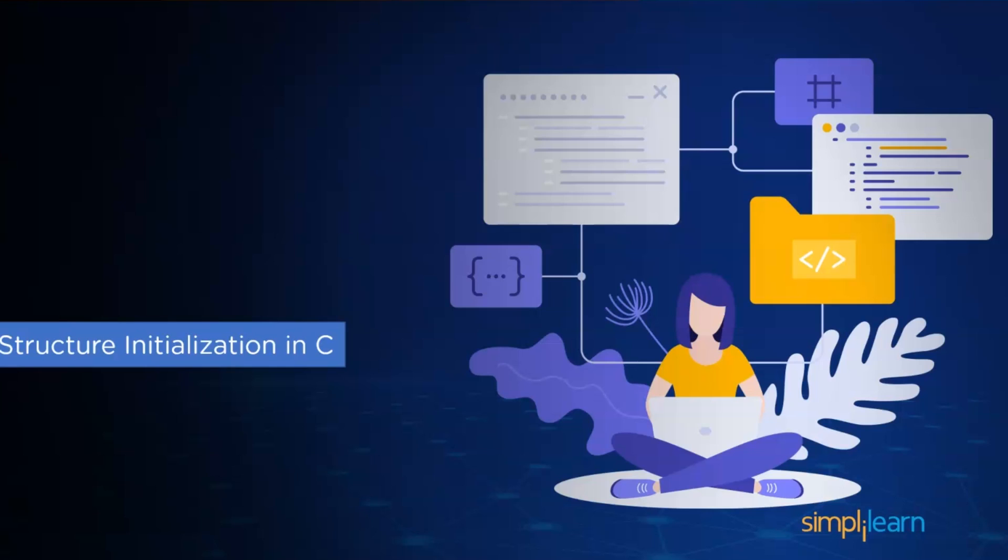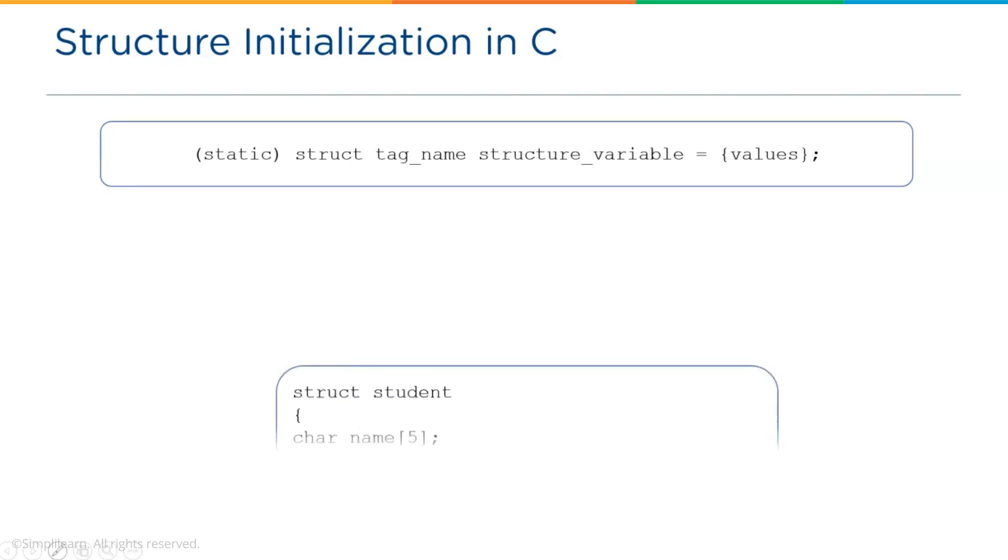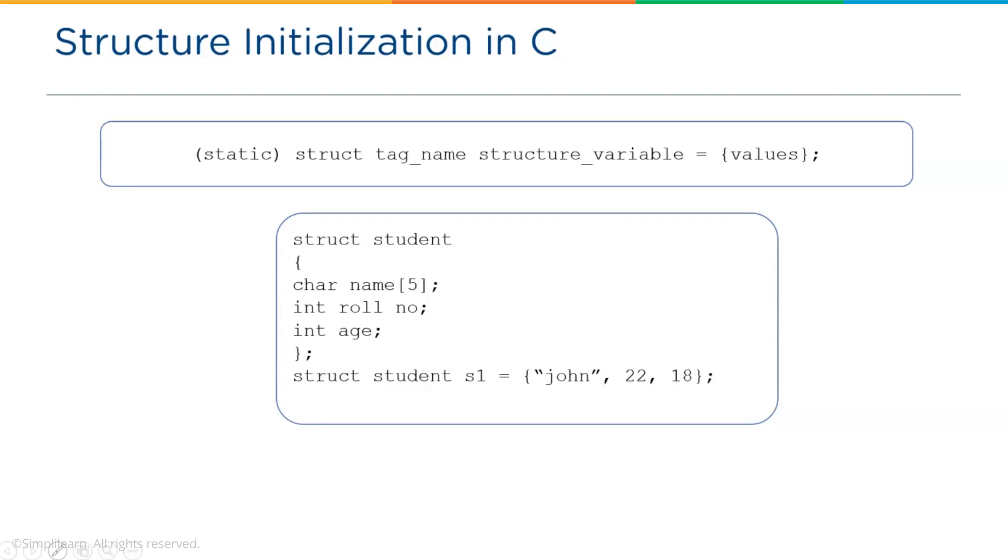Next, we have structure initialization in C. We can also initialize the structure variable. And to initialize, we can directly assign values of all the structure members inside the curly brackets with an assignment operator. For example, struct student s1 is equal to inside the curly brackets enter the values separated by comma operator.